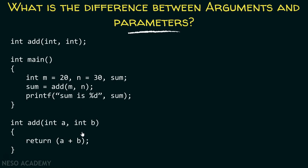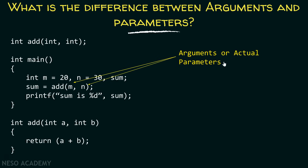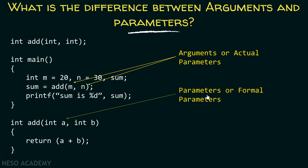Here is the example we have already seen. The two variables in the function call are called arguments or actual parameters, and the two variables in the function definition are called parameters or formal parameters. Basically, the variables available in the calling function are called arguments, and the variables in the definition or declaration of the function are called parameters. Please remember this point.